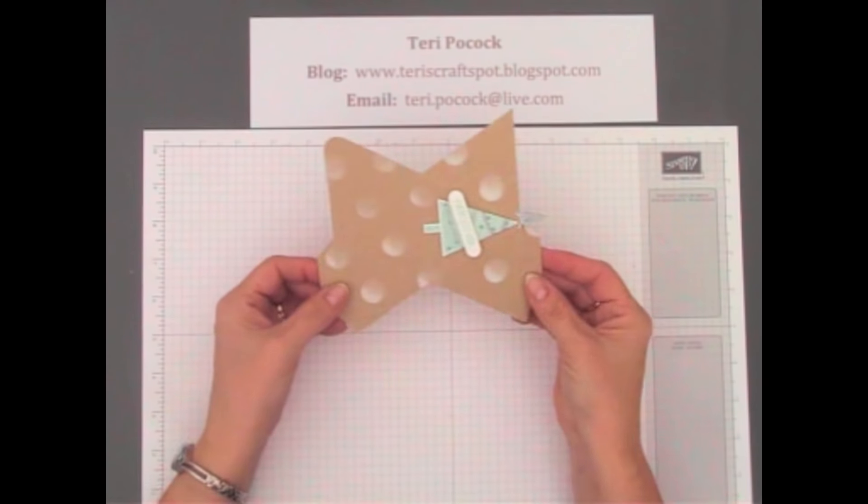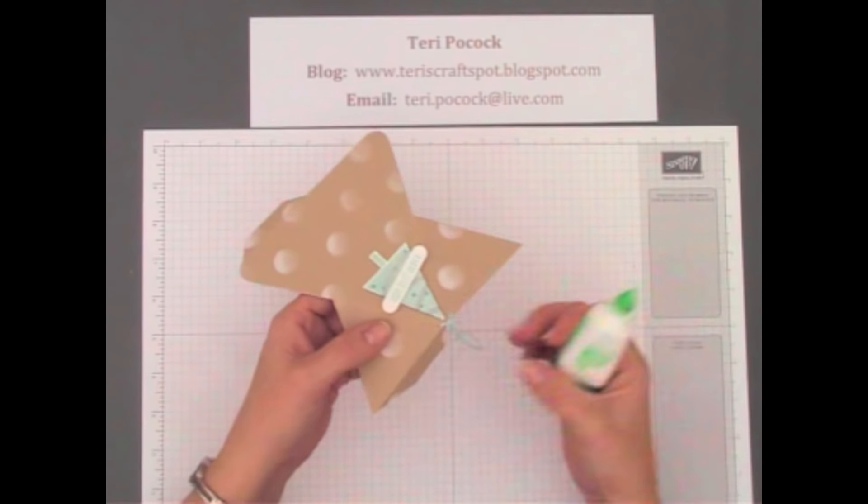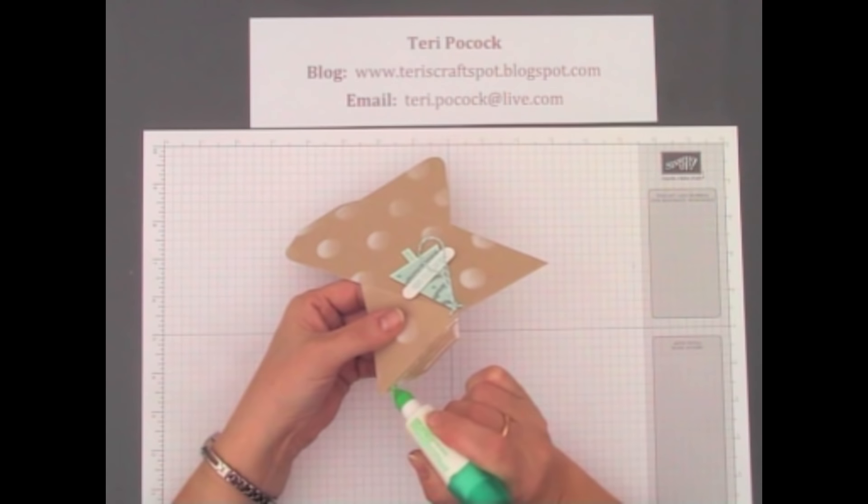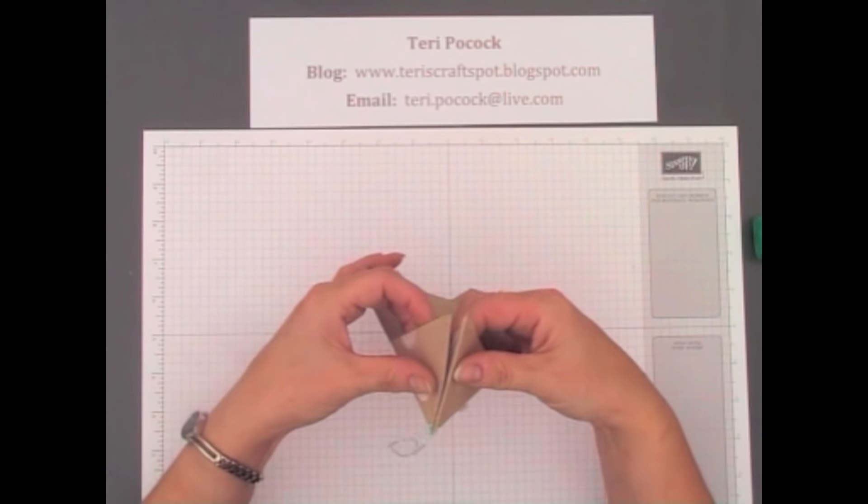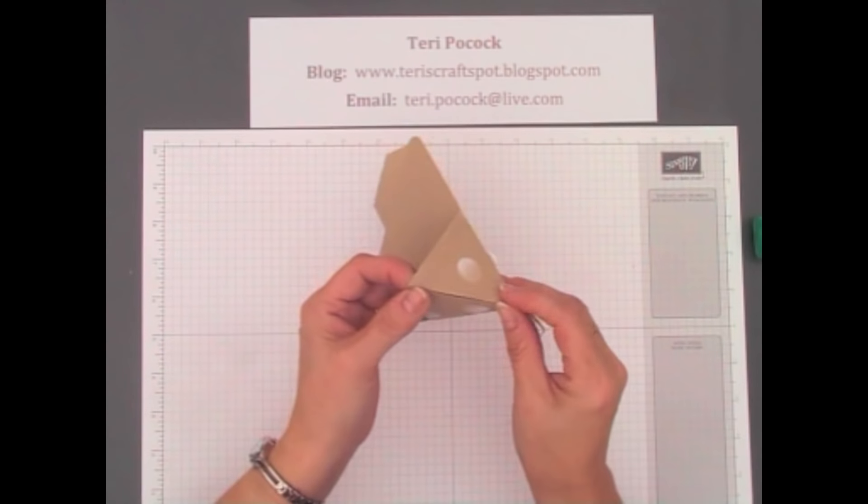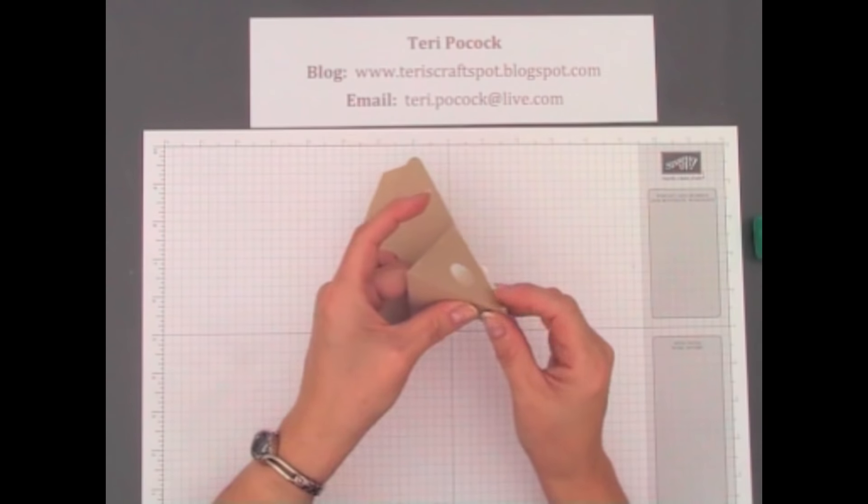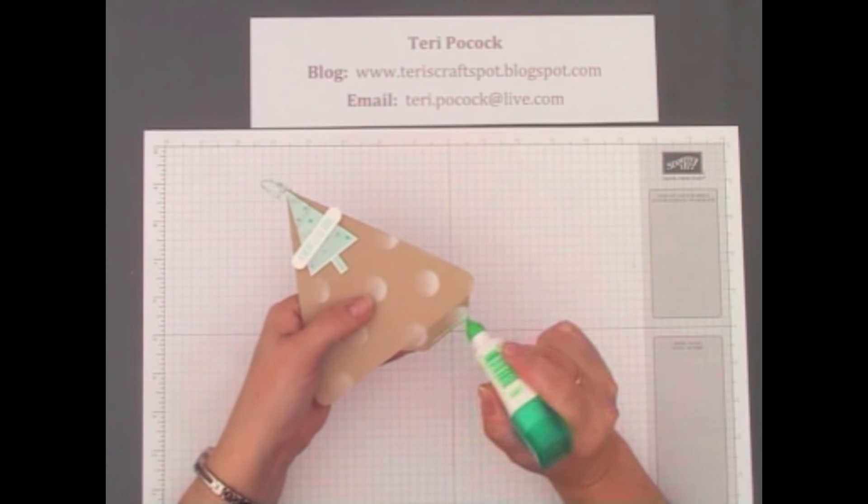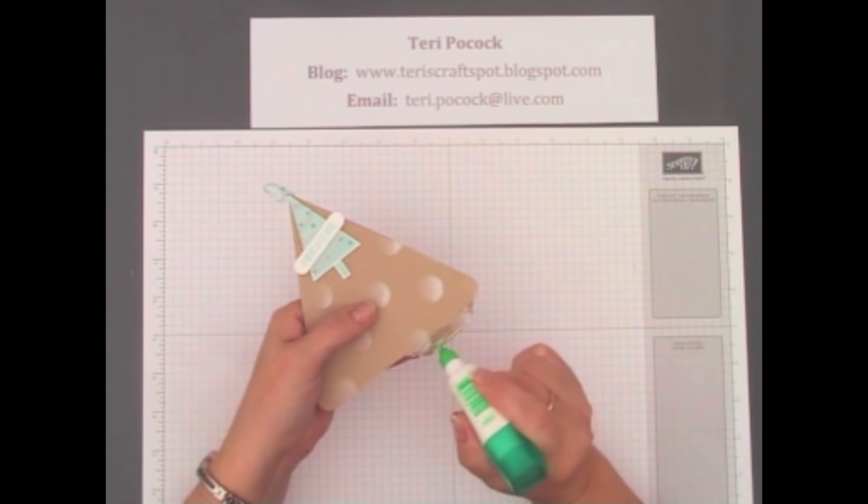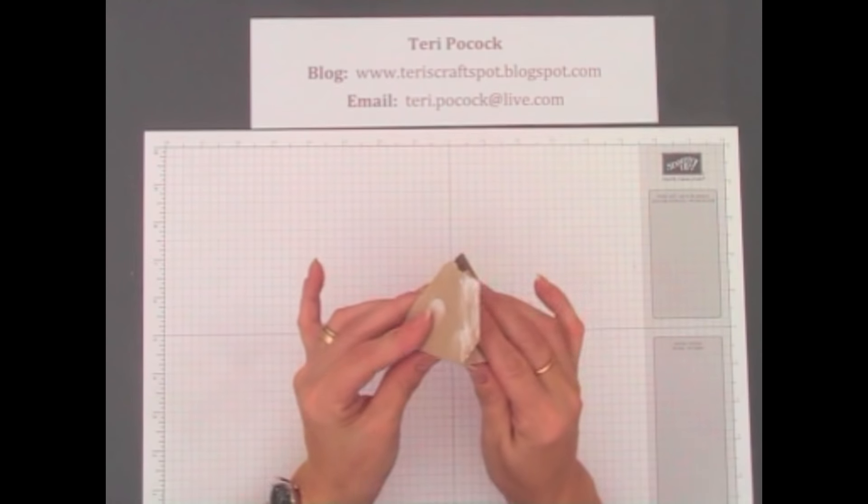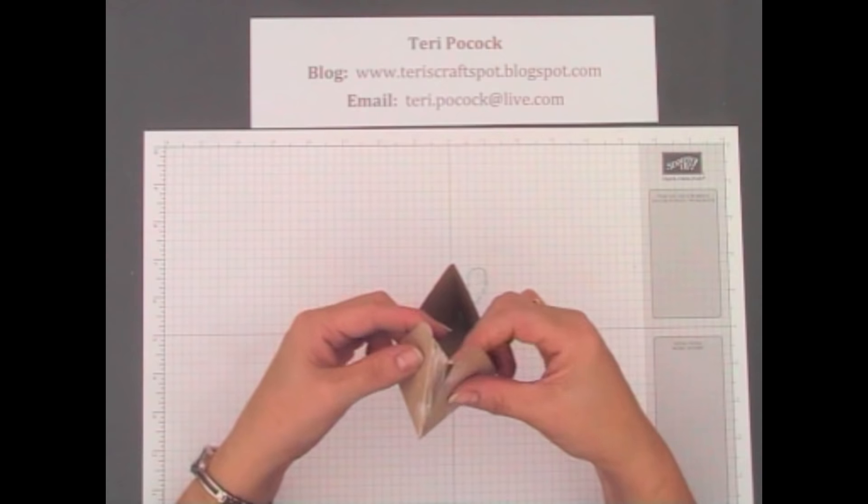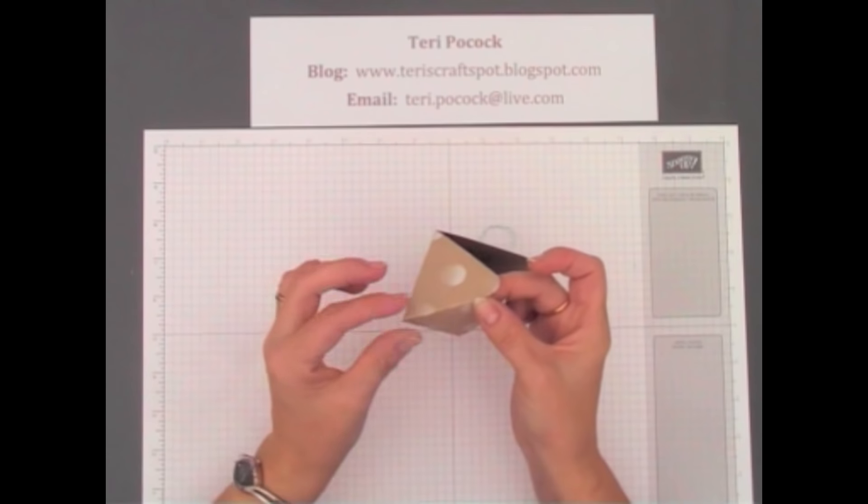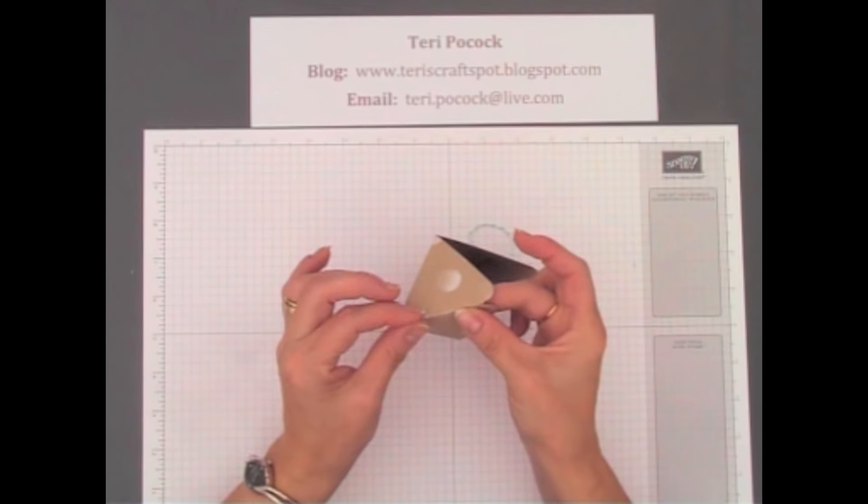Then we can glue our box together. Now we put the glue on these two side tabs. So just hold that in position for a second. There we go.